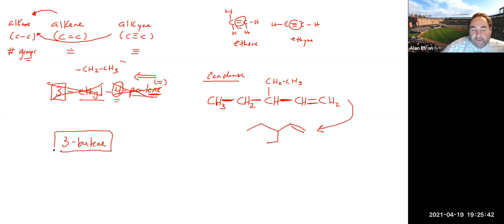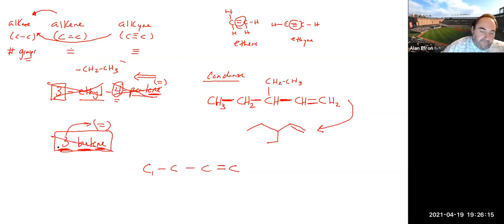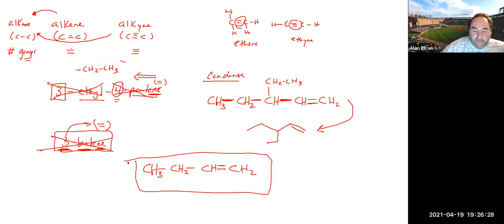For '3-butene': butene is based off butane, which is four carbons in a row. The 'ene' means we have a double bond, and it's at carbon three. Calling the leftmost carbon number one, carbon two is next, then carbon three where the double bond starts. Fill in hydrogens: two on the first carbon, one on carbon two, two on carbon three, and three on the end carbon.